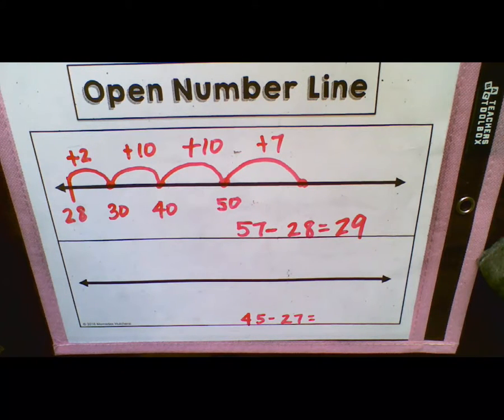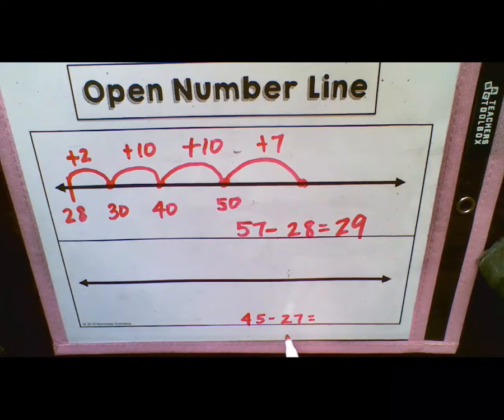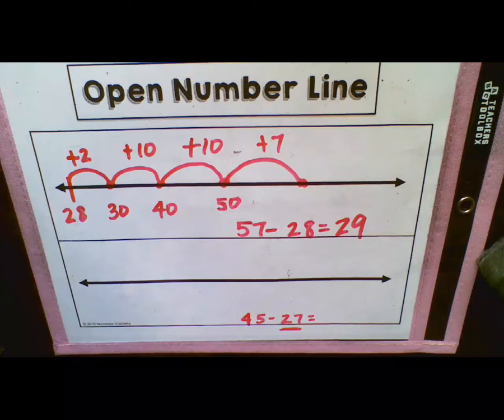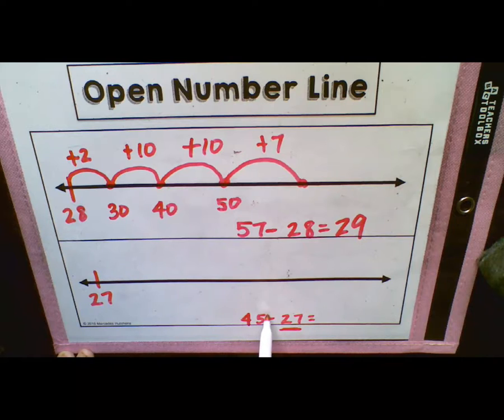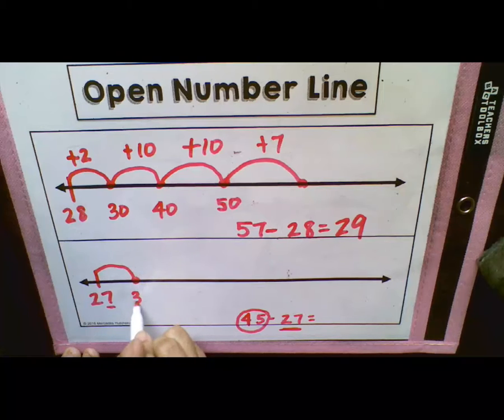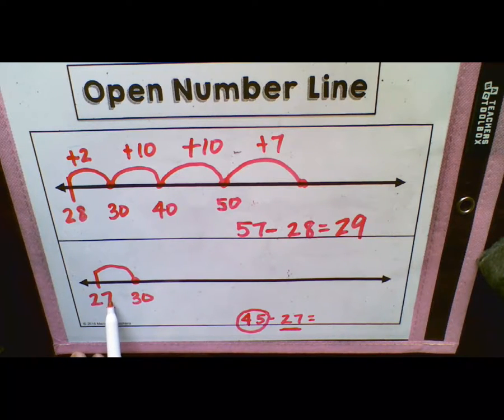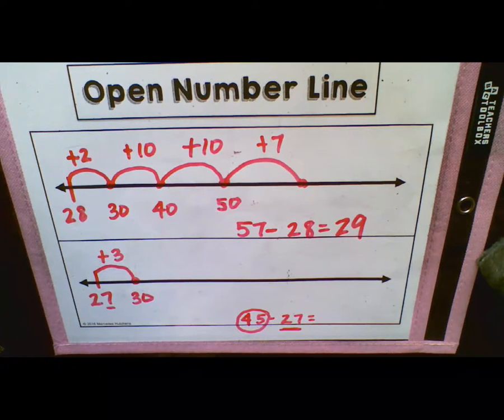Our next one is 45 minus 27. So again, we aren't doing like we did in 5-2. We're not going to write our 45 here. We're going to start with our 27. Remember, we're always working with that last number. We're going to write 27 here. And we know our goal, the number we're trying to get to, is 45. So again, we're working with tens and ones. So we want to see how we can get this number to the next closest 10. The next closest 10 to 27 is going to be 30. So we know we need to get to 30. And we need to see what we did to get from 27 to 30. We added 3.